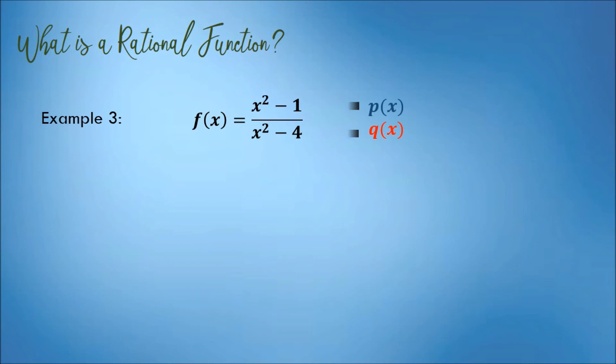This is a rational function because the numerator and denominator are both polynomial functions. The degree of the numerator is 2, while the degree of the denominator is also 2.